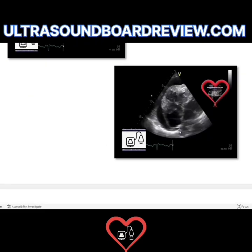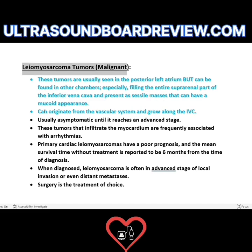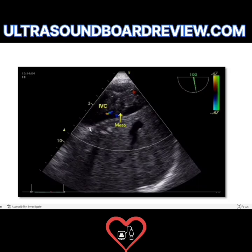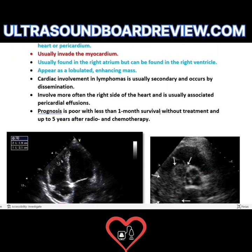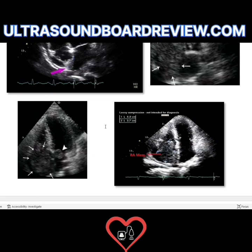Leiomyosarcoma can originate from the vascular system and grow along the IVC. If you're asked on your test which tumor is typically found growing along the IVC, look for the leiomyosarcoma. A biopsy is the only way you can accurately diagnose a tumor. Up to this point, notice the trend: most malignant tumors have been located on the right side of the heart.